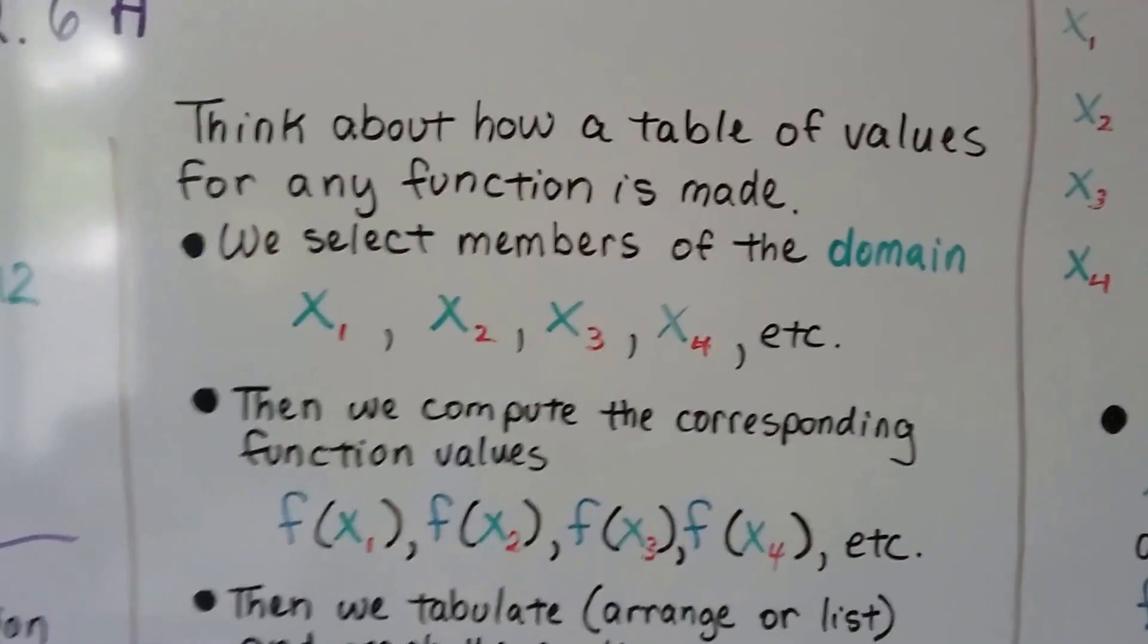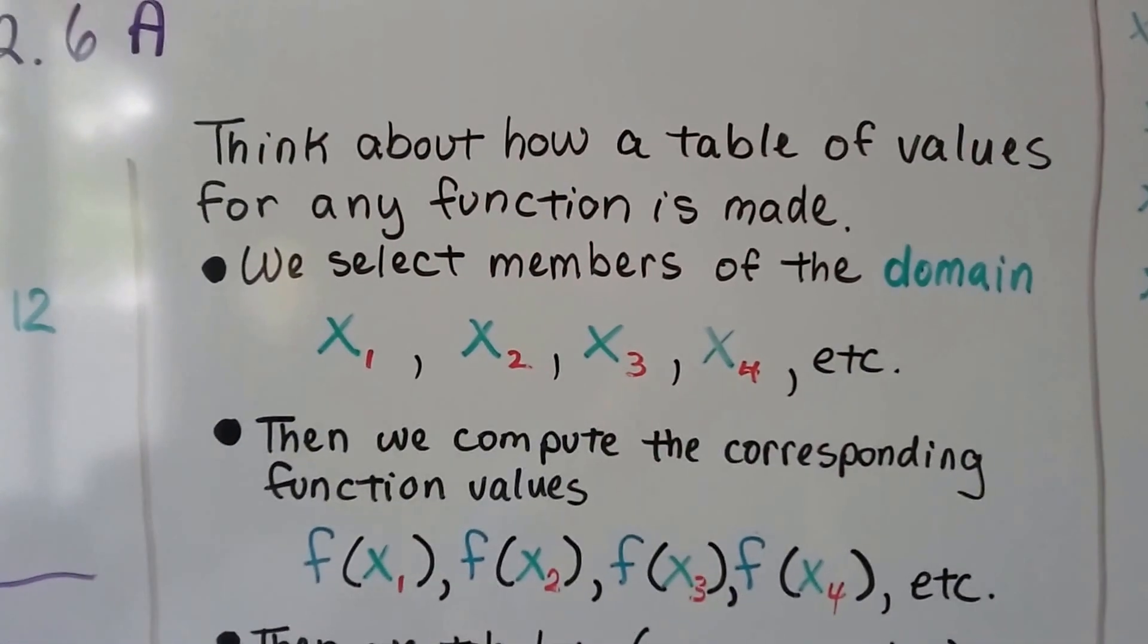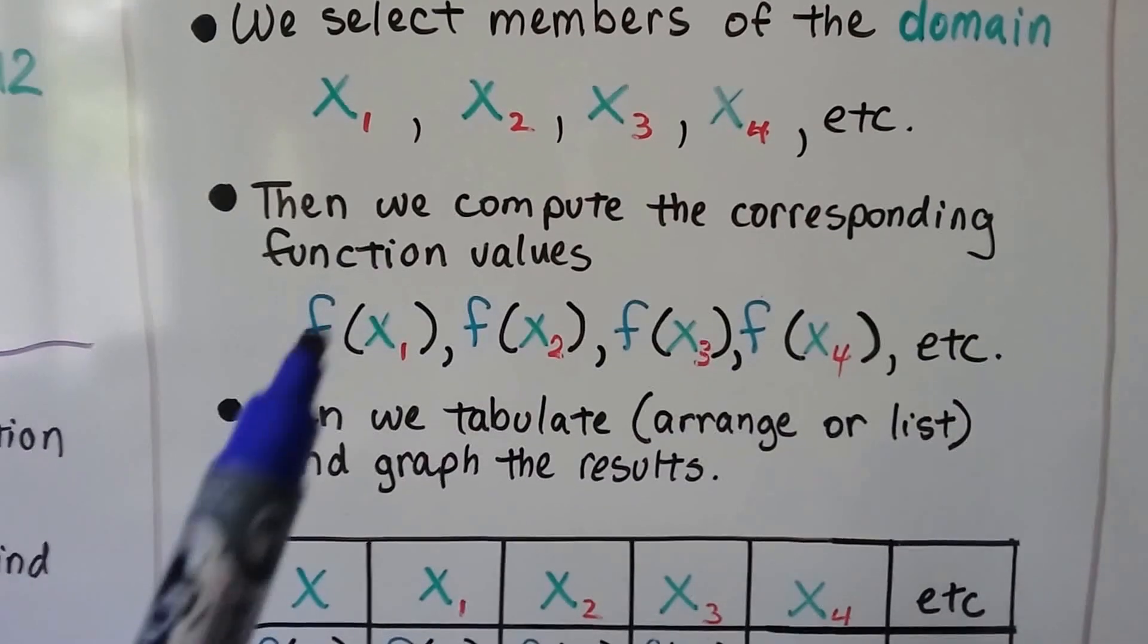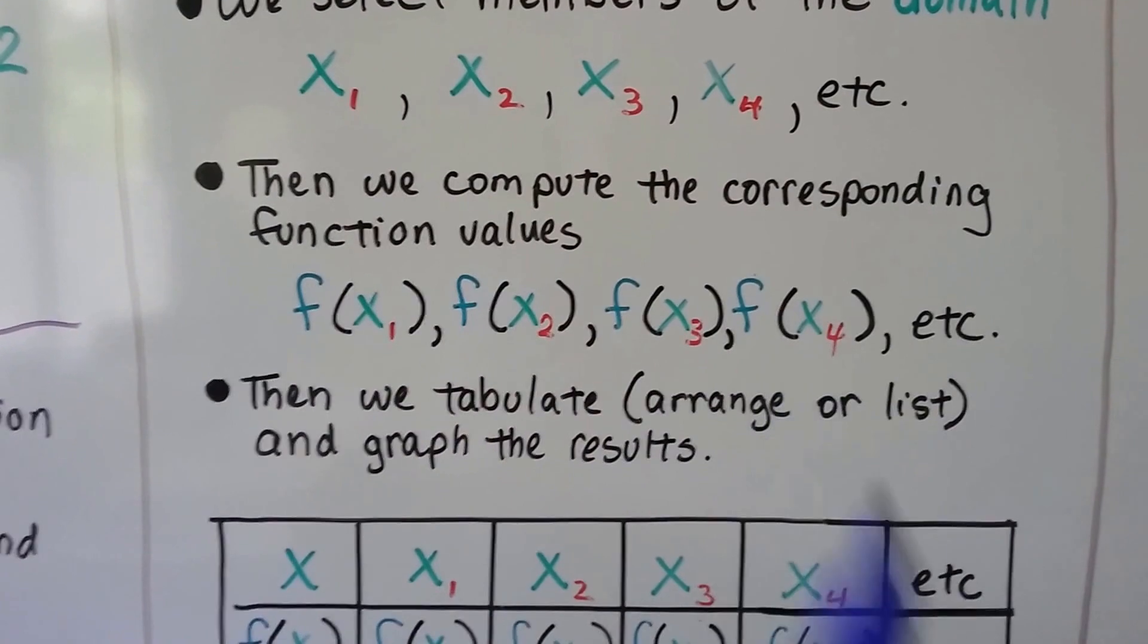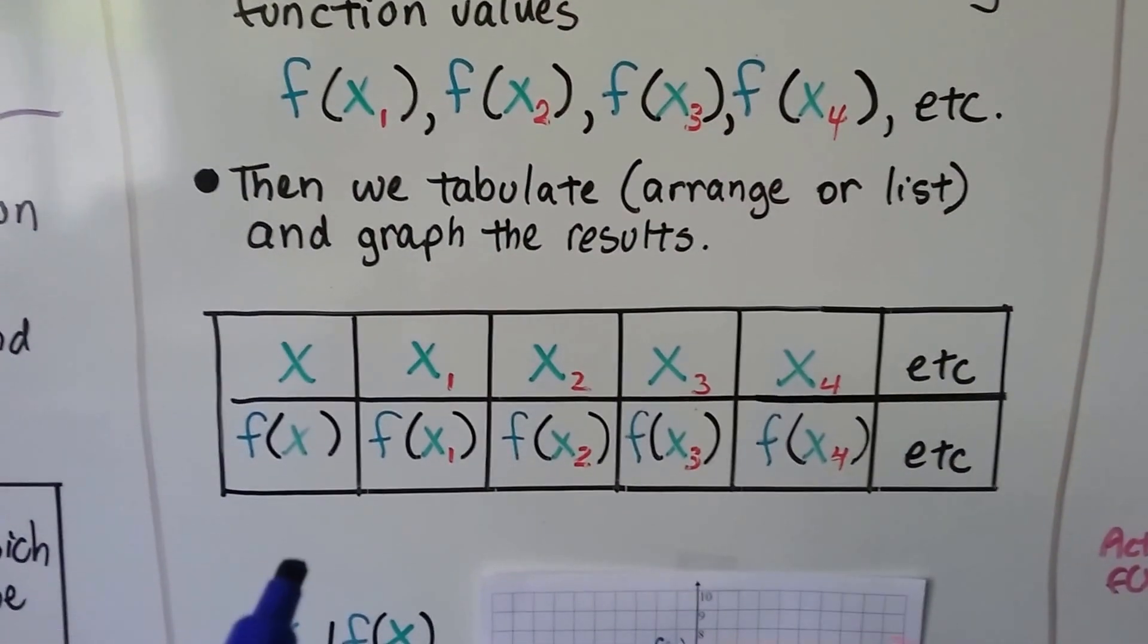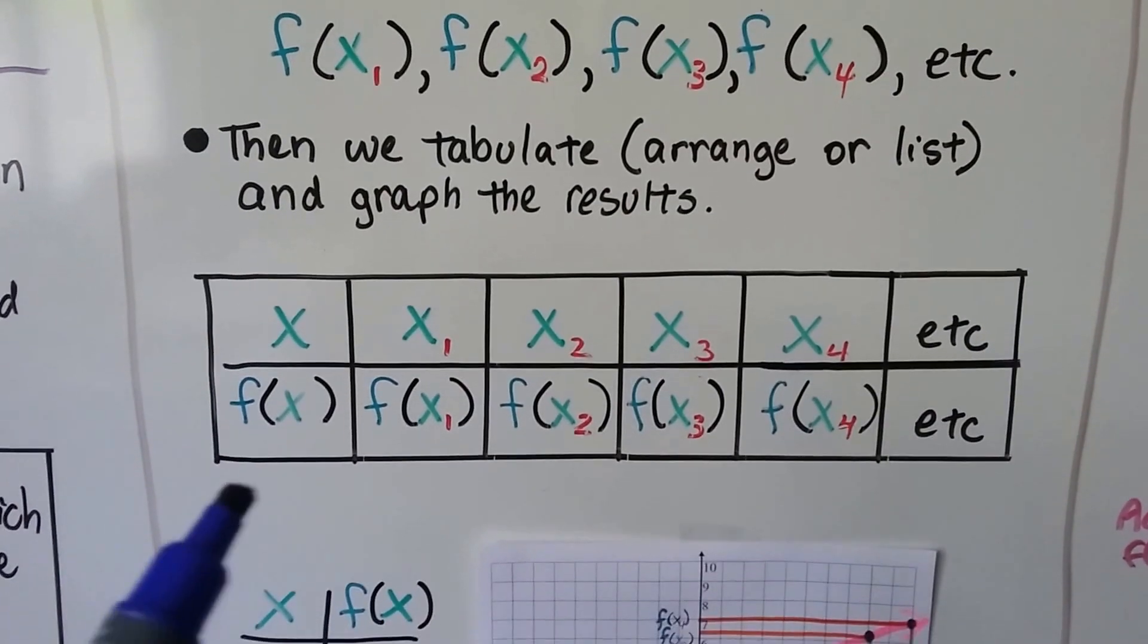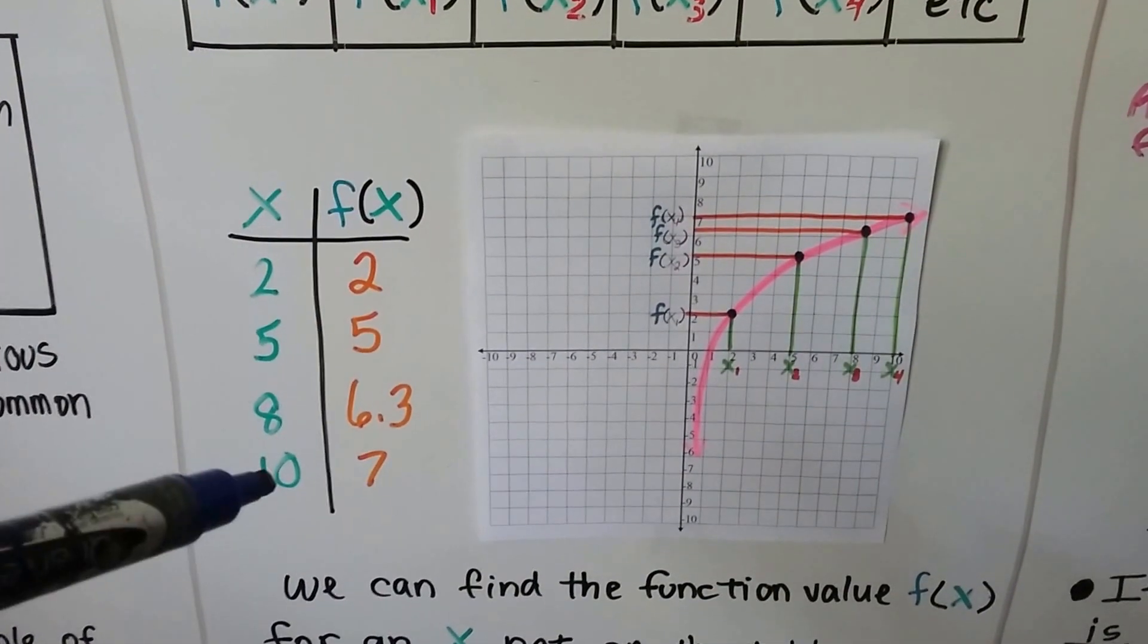When we think about how a table of values for any function is made, we select members of the domain: first x, second x, third x, fourth x, and so on. And we compute the corresponding function values. Function of x is the same thing as y. So we have our first one, our second one, our third one, our fourth one, and we tabulate, which means arrange our list, the graph and graph the results. This would be our table of values, our x, y table, or function table, and they correspond to each other.